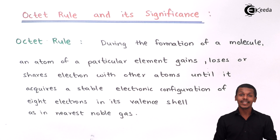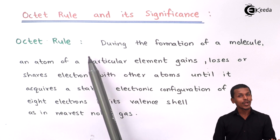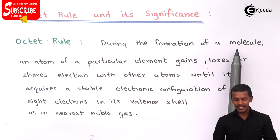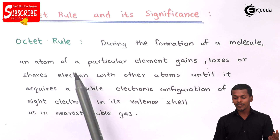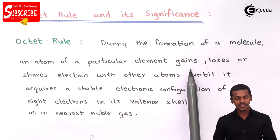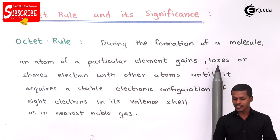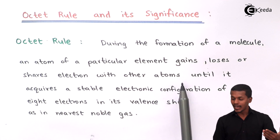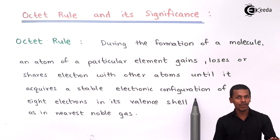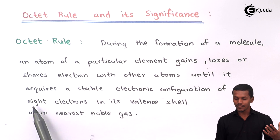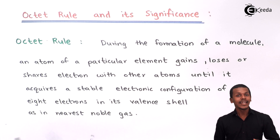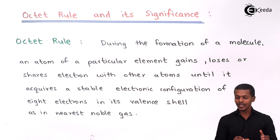So now let us understand what is the octet rule. According to the octet rule, during the formation of a molecule, an atom of a particular element gains, loses, or shares electrons with another atom until it acquires a stable electronic configuration of eight electrons in its valence shell, as in the nearest noble gas. This is what the octet rule is.